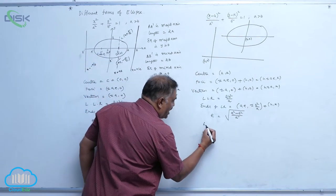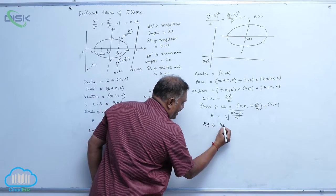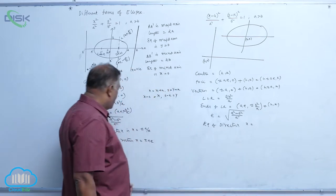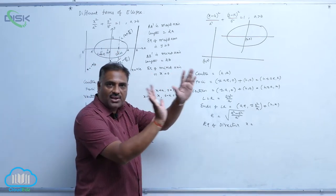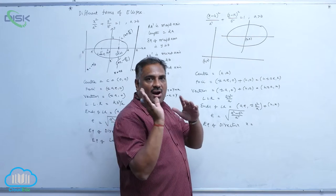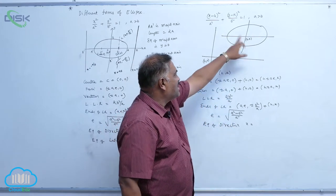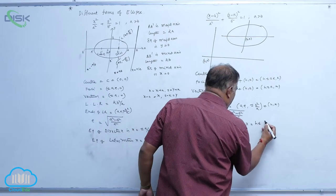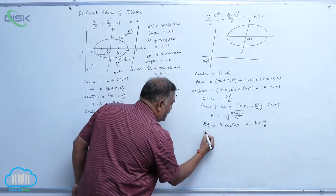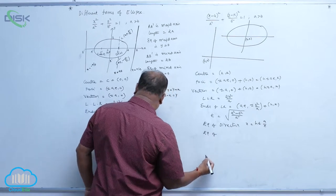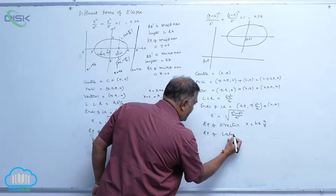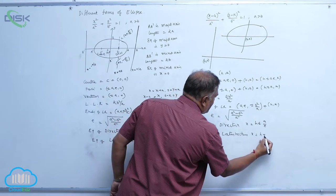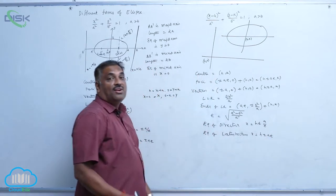The equation of the directrix is x = h ± a/e, since it is a vertical line that shifts horizontally by h. The equation of the latus rectum is x = h ± ae.